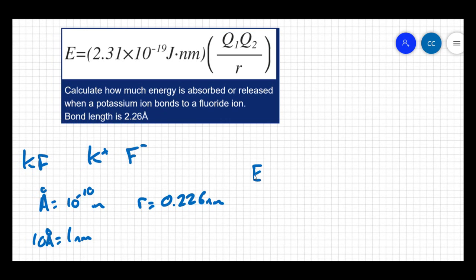Now I can say E equals this constant, 2.31 times 10 to the negative 19 joules times nanometers, times Q1, which would be the charge on the potassium, which is just plus one.